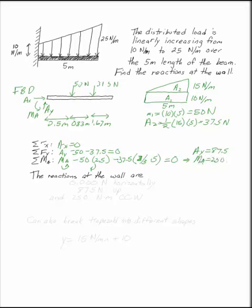Answer the question. The reactions at the wall are 0.000 N horizontally, 87.5 N up, and 250 N meters counterclockwise.